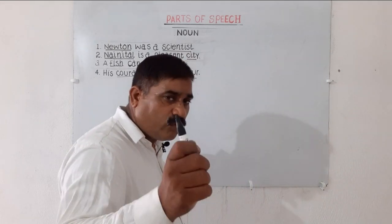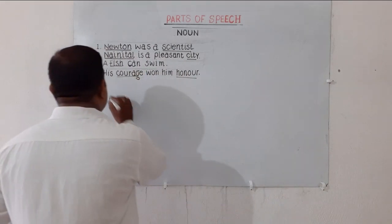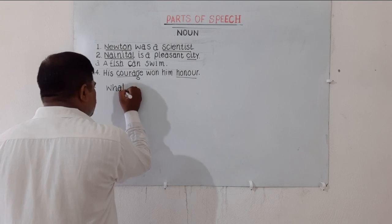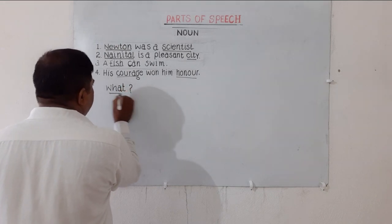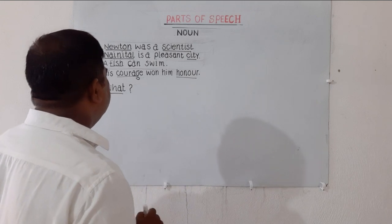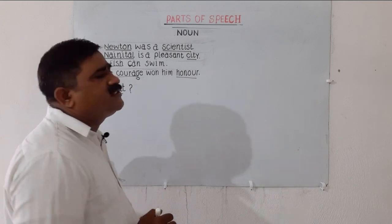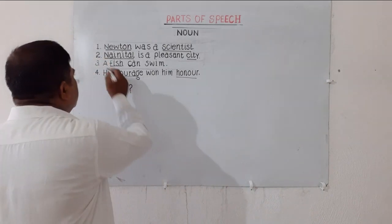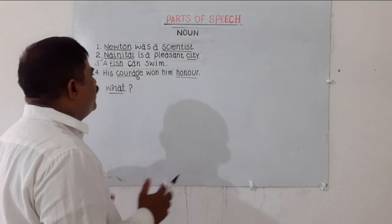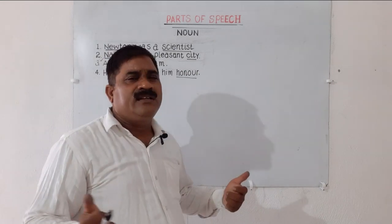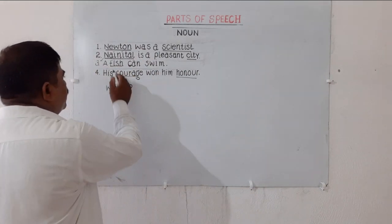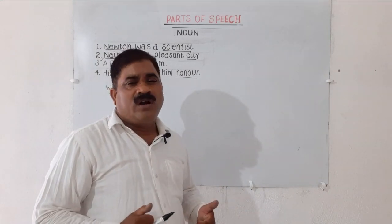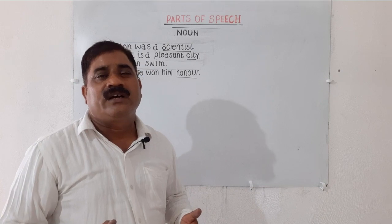That interrogative word is 'what.' For example, take the second sentence: Nanythal is a pleasant city. What is a pleasant city? You would find your answer: Nanythal. A fish can swim — what can swim? Fish. His courage won him honor — what won him honor? Courage.